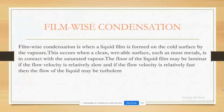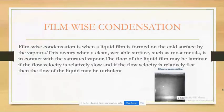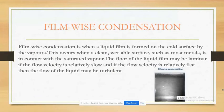Film-wise condensation is when a liquid film is formed on the cold surface by the vapors. This occurs when a clean, wettable surface such as most metals is in contact with saturated vapors. The flow of the liquid film may be laminar if the flow velocity is relatively slow, and turbulent if the flow velocity is relatively fast.